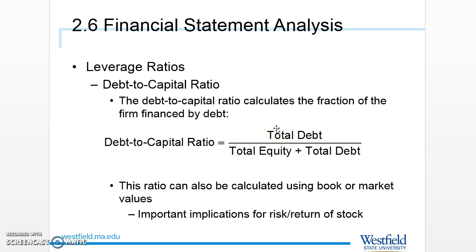The percentage of the firm financed by debt has important implications for risk and return of the stock. A firm mostly financed by debt means very little can go wrong before the equity piece disappears. For example, if you finance a company entirely by debt, even a small decline in value — say from a hundred dollars to ninety-five — leaves you five dollars underwater with ninety-five in assets but owing a hundred, making it rational to file for bankruptcy.